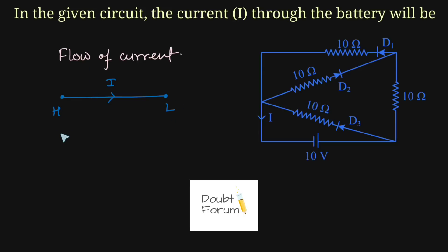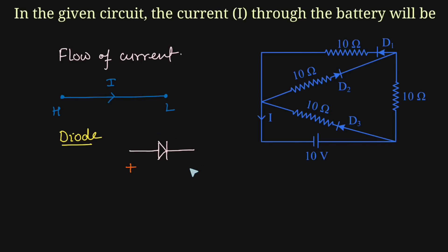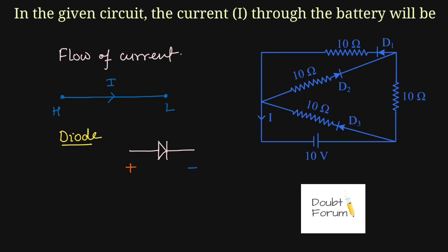The second thing is about the diode. This is the symbol of a diode. In this symbol, this point represents its positive terminal and this point represents its negative terminal. There are two ways a diode can be connected. The first one is forward biasing, which means the positive terminal is connected to the positive terminal of the battery and the negative terminal is connected to the negative terminal. In simpler words, when the positive of the diode is at higher potential than its negative, this kind of biasing is called forward biasing. In forward biasing, the diode will behave like a closed circuit, or we can say it will act like an on switch.